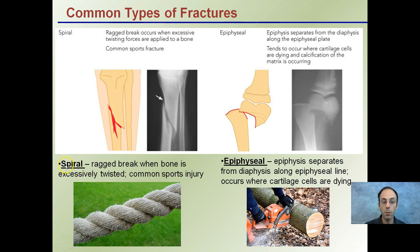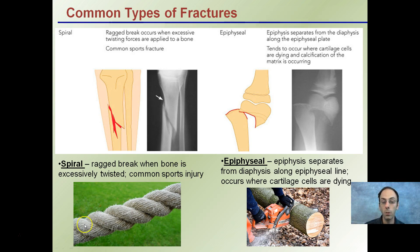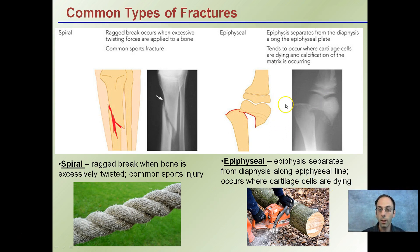We also have a spiral fracture, which is a ragged break when the bone is excessively twisted, common in sports injuries. You have that stop-and-pivot motion that causes the twisting action, shown by the rope image here. The epiphyseal fracture is where the epiphysis separates from the diaphysis along the epiphyseal line. This occurs where cartilage cells are dying, as you can see in the X-ray image here.